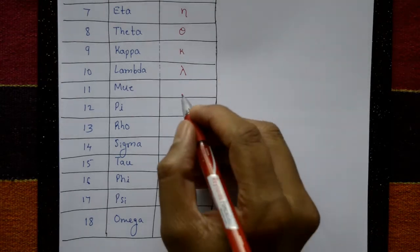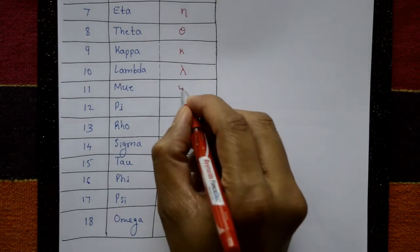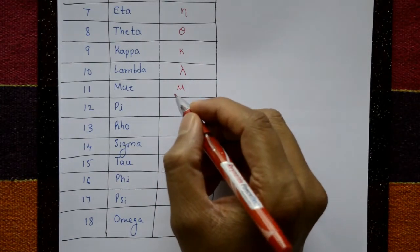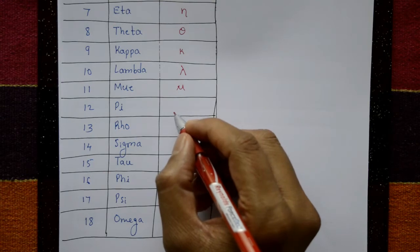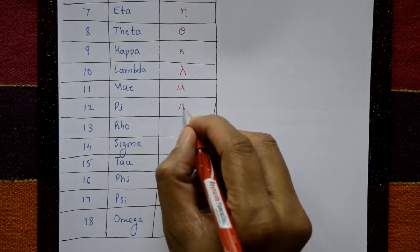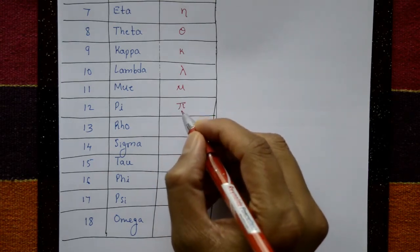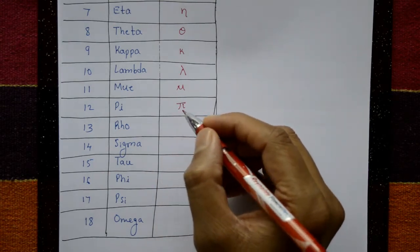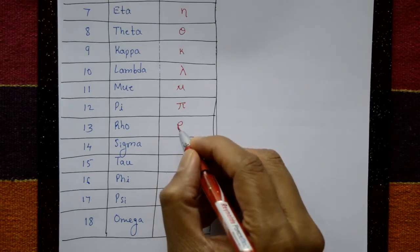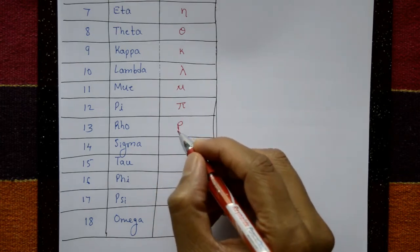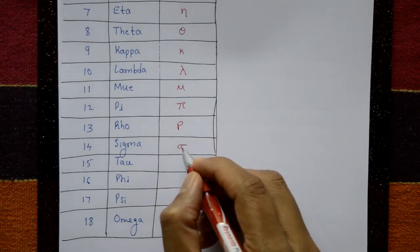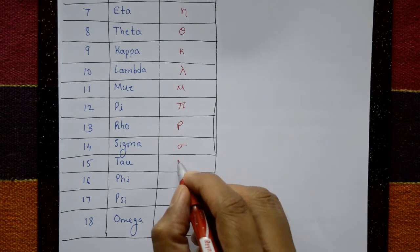Mu — this is the mu symbol. And pi — now pi, all of you know this pi. And this is rho.